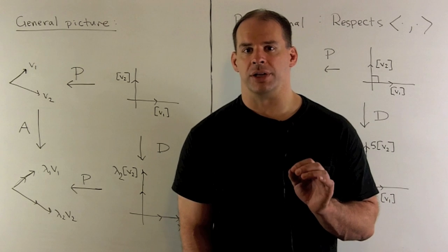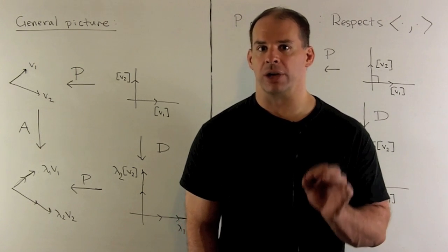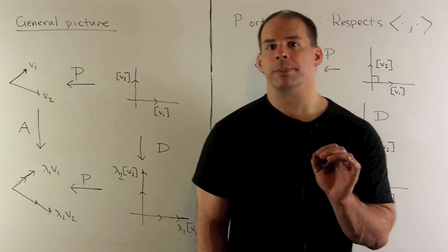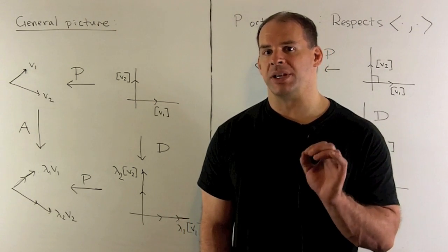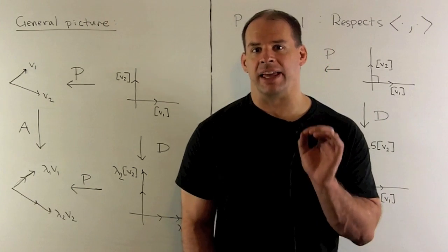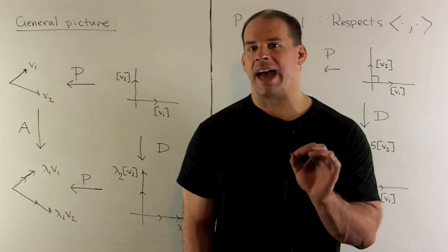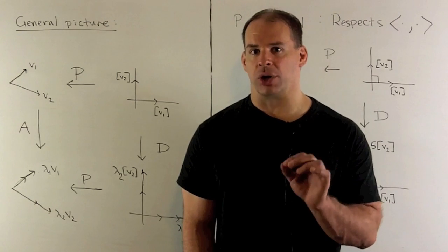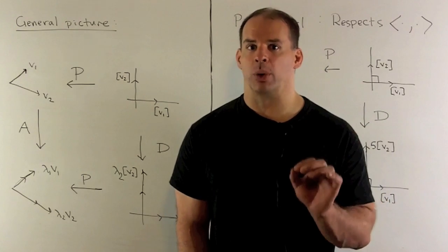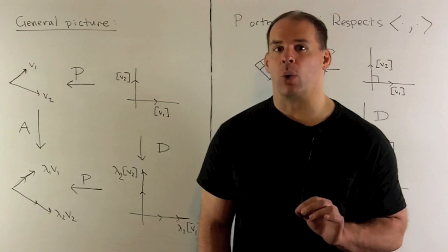The big question is: what do we gain by using an orthogonal change of basis matrix? There are two answers. First, when diagonalizing matrices we have to take the inverse of the change of basis matrix at some point. If we have an orthogonal change of basis matrix, we get that inverse for free — we just take the transpose. So using an orthogonal change of basis matrix can cut back on our work.